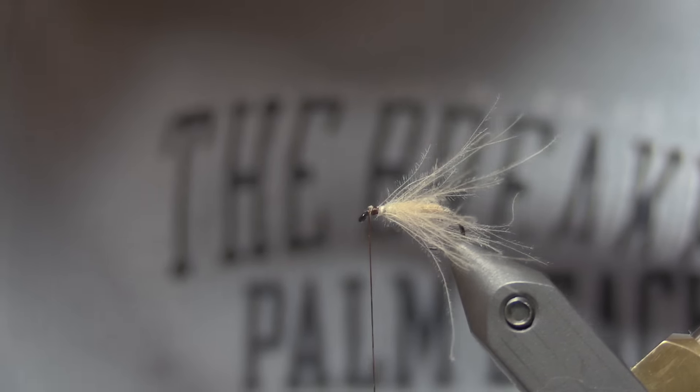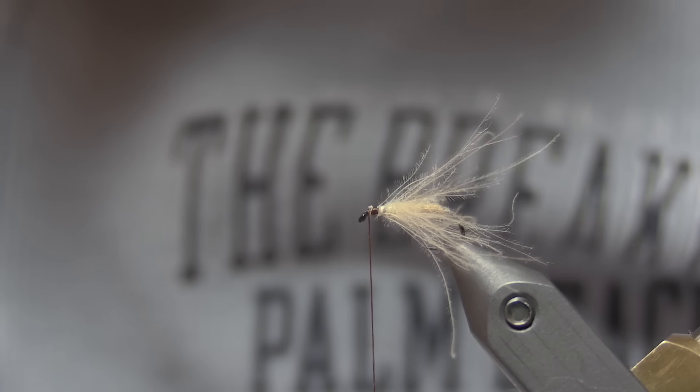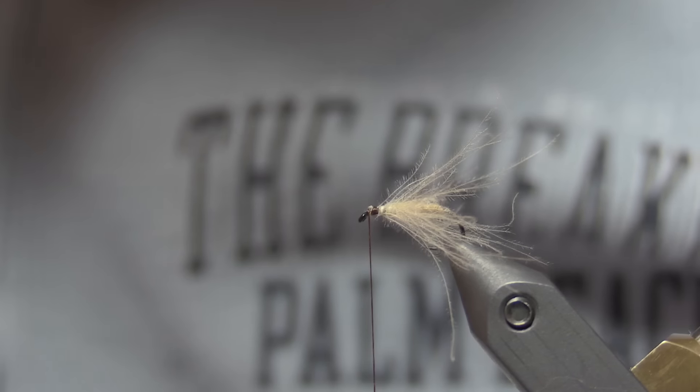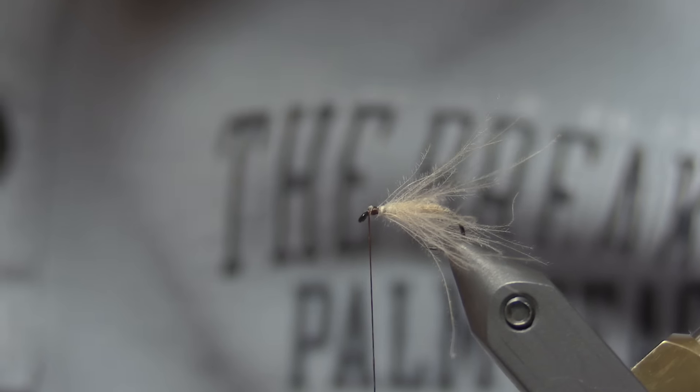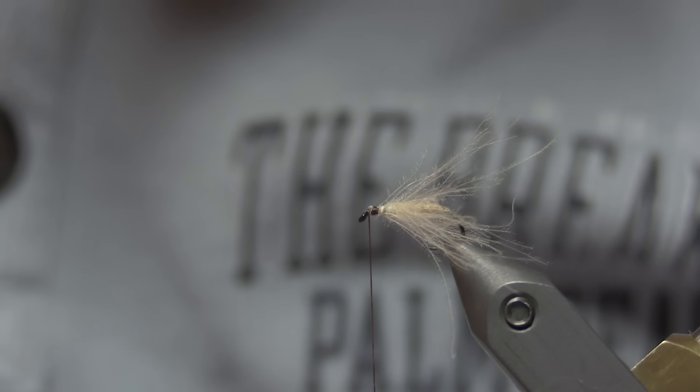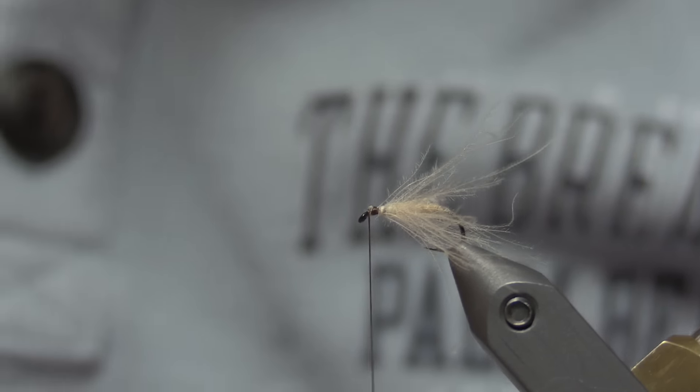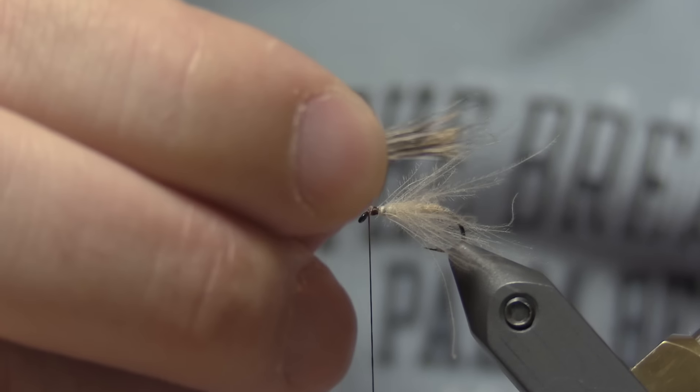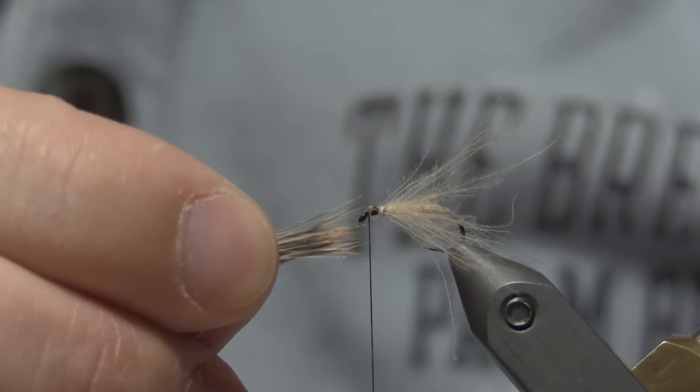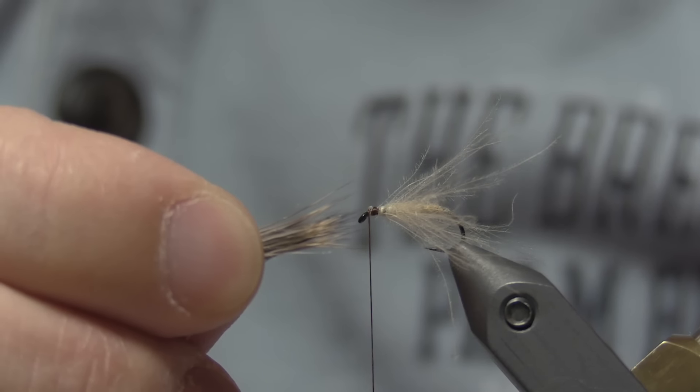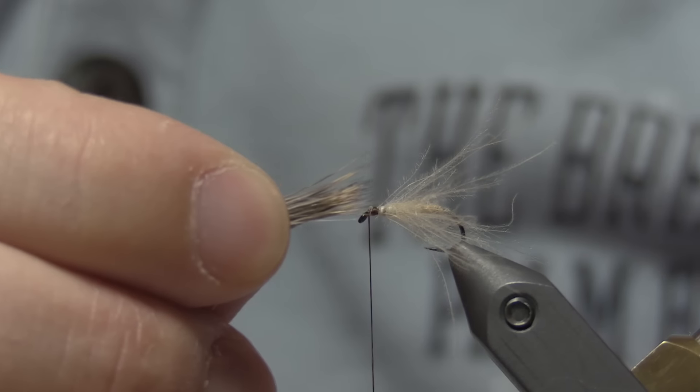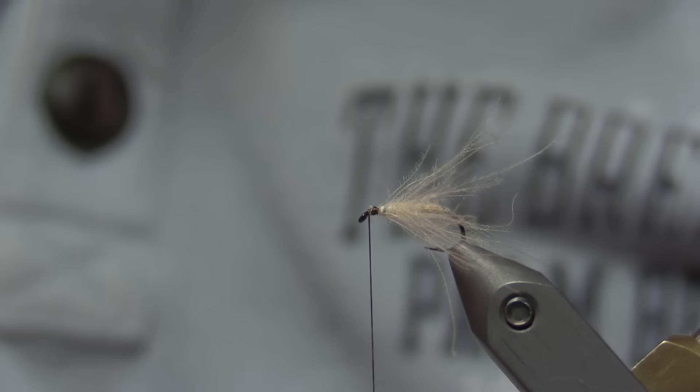But if you stack it and it doesn't come out the way you like, take it out, clean it again and stack it again. And another tip is to take a little bit more than you need at first, because what will happen is once you clean it, sometimes you can lose up to a third of the hair because of underfur and shorts. And directional hair will pop out, so you have a lot less than what you started with originally.